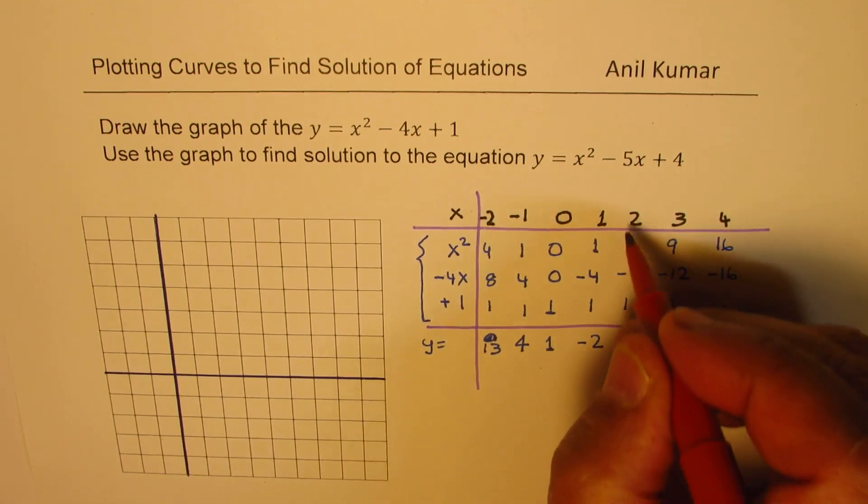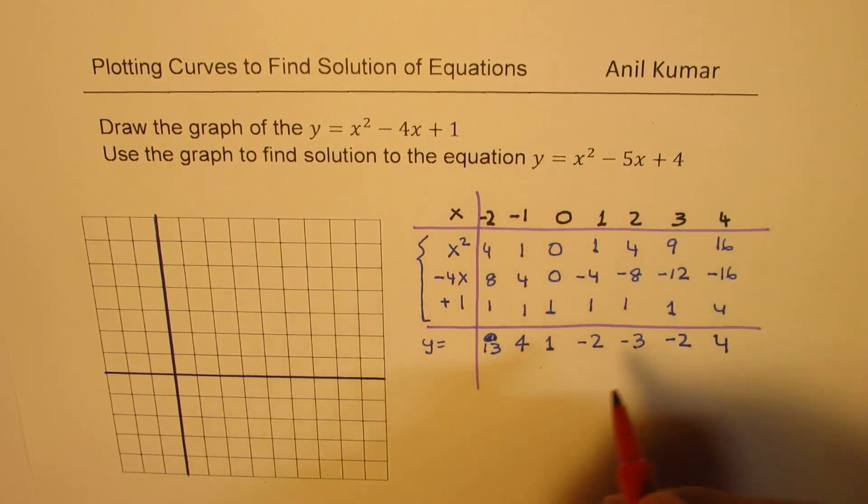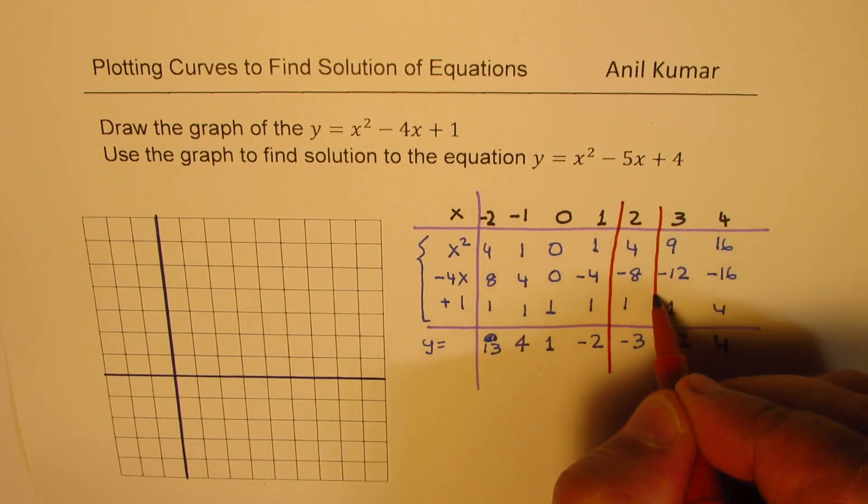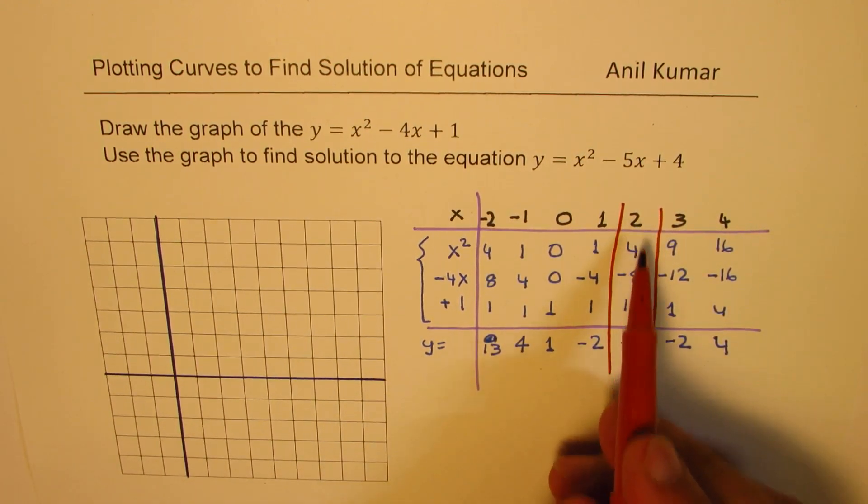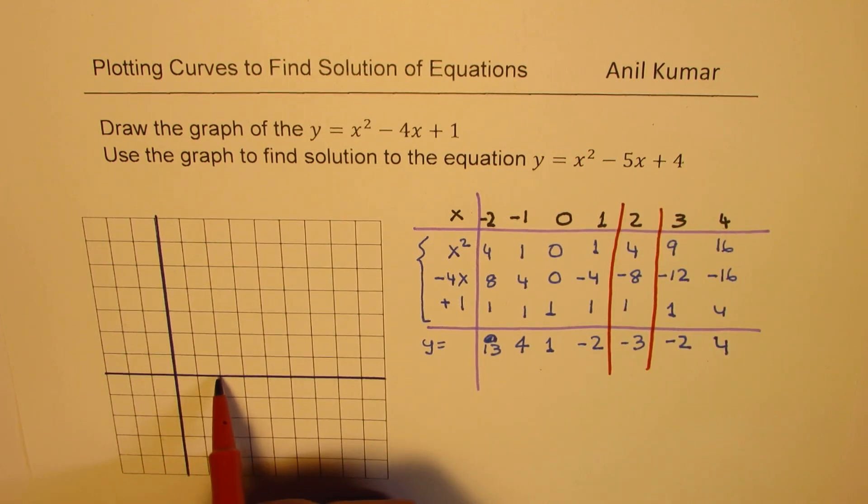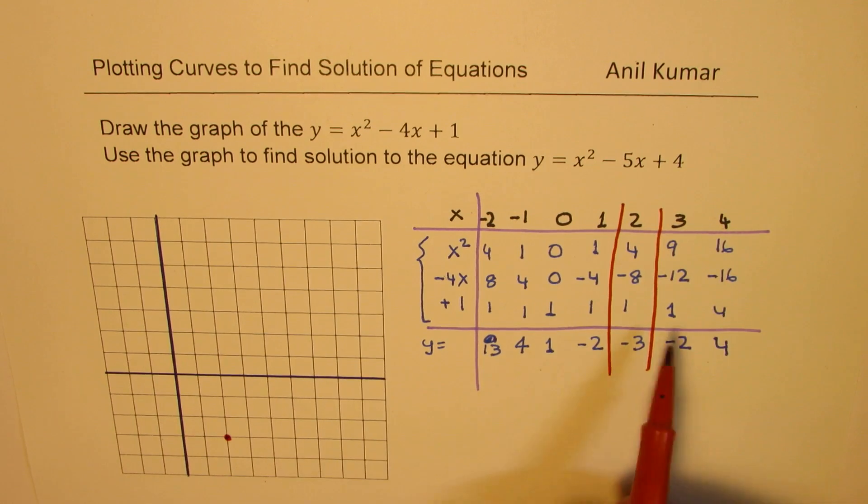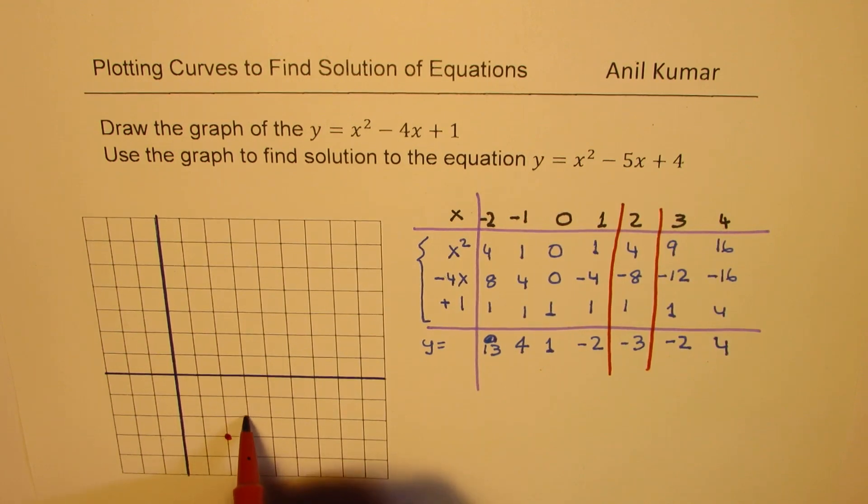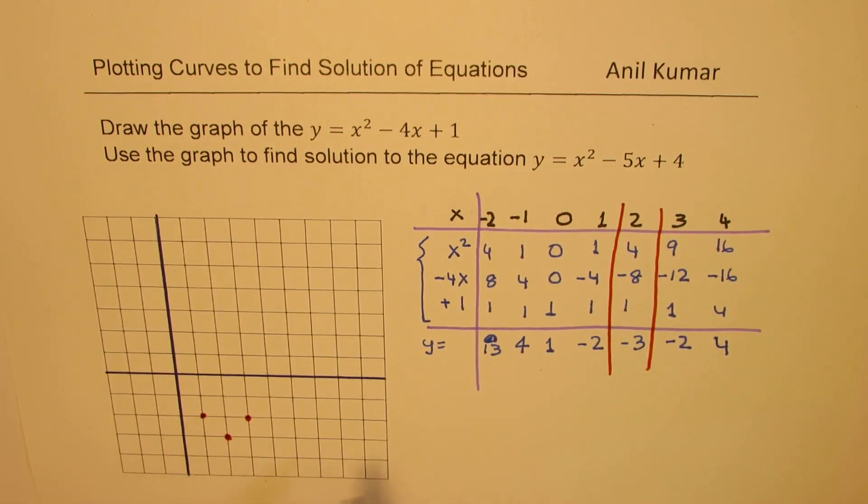So we'll begin with this value at x equals 2. So at x equals 2 we have a point minus 3. So let's put this point on the graph. x equals 2, we got minus 3. So that is the vertex. On the other two sides as you move 1 unit to the left and right we get value of minus 2.